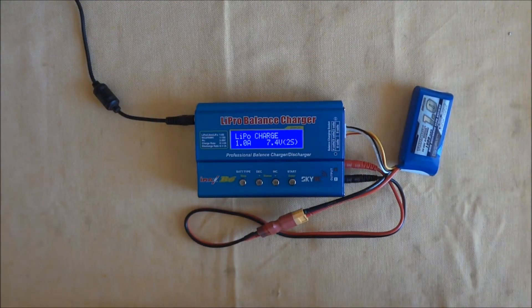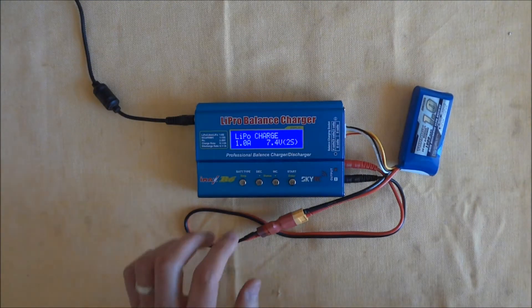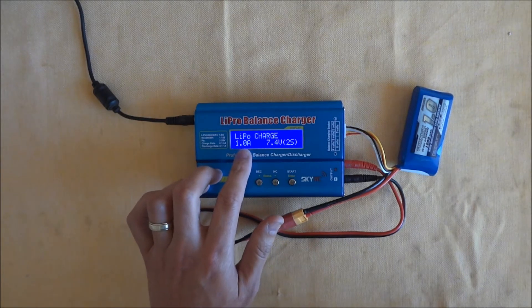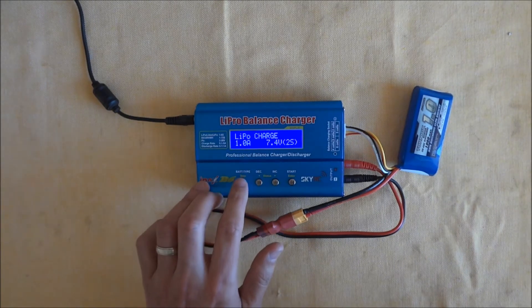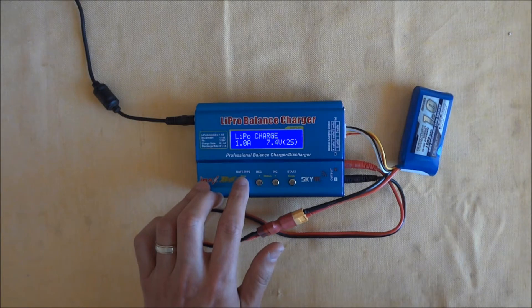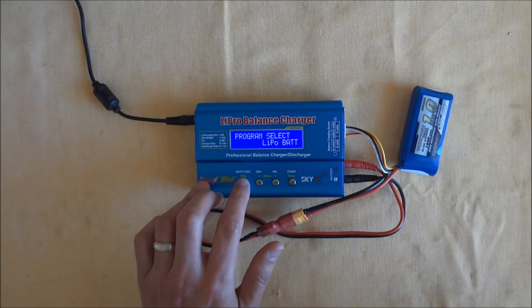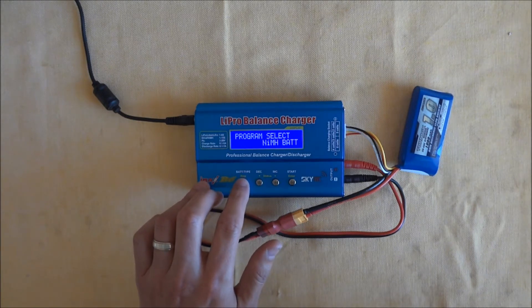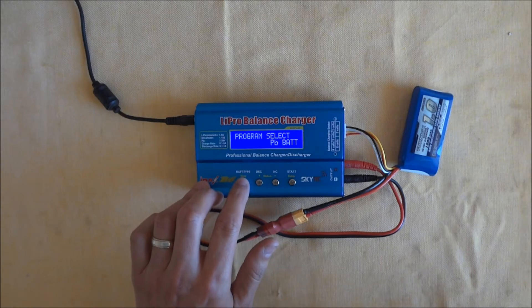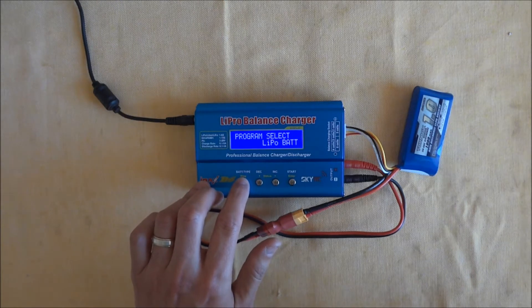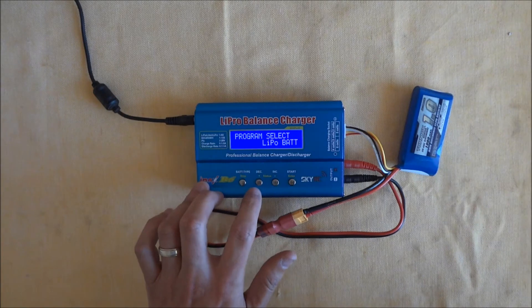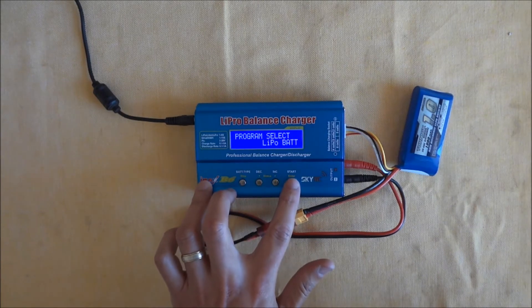Okay. So once everything's all hooked up correctly, we need to find the LiPo battery section. So if you're not in the LiPo section, you just need to keep pressing the battery type button and that'll cycle through. So keep pressing that till you get to LiPo. So we've got LiPo battery here. So we want to go into that. So we press enter.